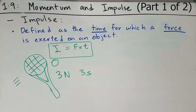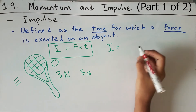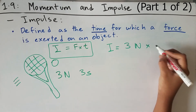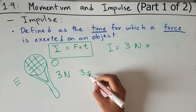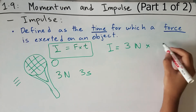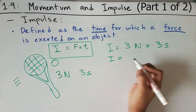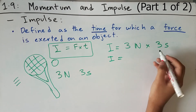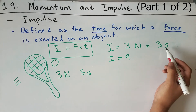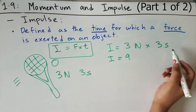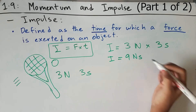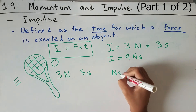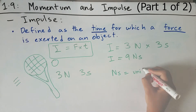Using this formula, we can find the impulse of the ball. The impulse I equals the force, which is three newtons, times the duration of the force, which is three seconds. Multiplying these gives three times three, which is nine, with units of newtons and seconds. So we get nine newton seconds. The newton second is the unit of impulse.